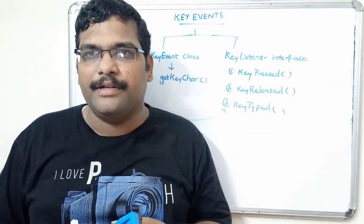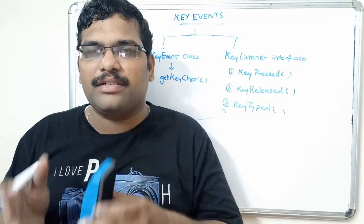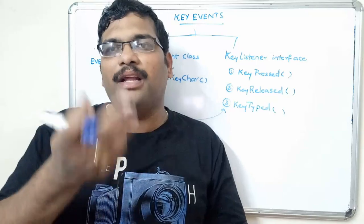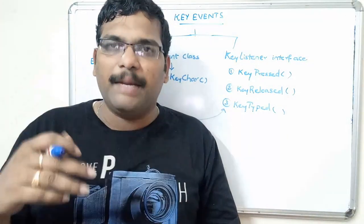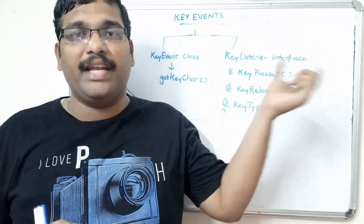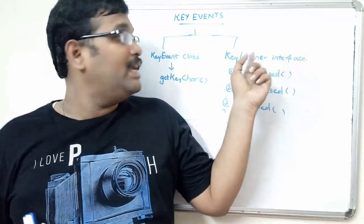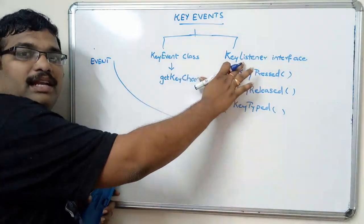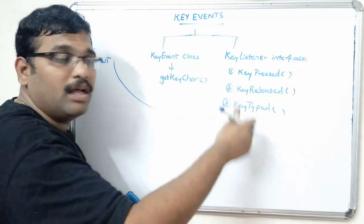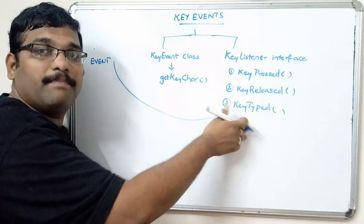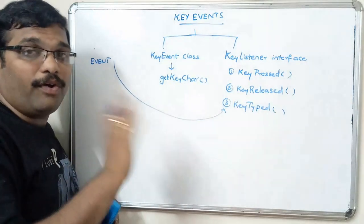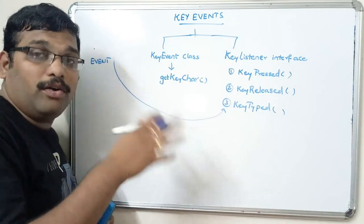Then we have to write the paint method. Our applet program always starts its execution from the init method. Once the init method is executed, the paint method will be called automatically. Whenever a key event occurs, that event will be transferred to the KeyListener interface, where the definitions for possible events are done, and according to the logic and code written in the program, that code will be executed. Hope you understood these key events — we have to follow the same format and template.